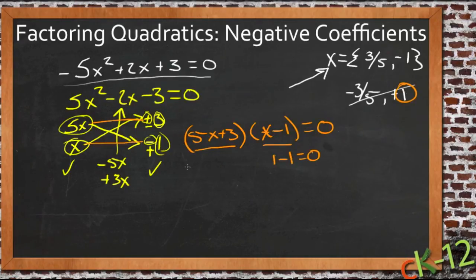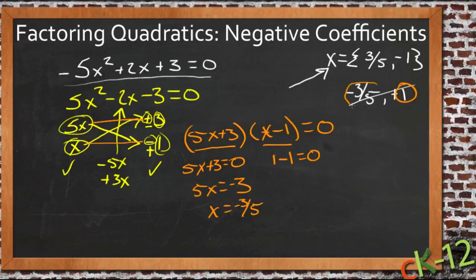And then 5x plus 3 equals 0. So we'll move 3 to the other side and we'll get 5x equals negative 3 and x equals negative 3 fifths. So yeah, Clara, I hate to say it, but I think whoever told you it was negative 3 fifths and positive 1, I would have to agree with them.